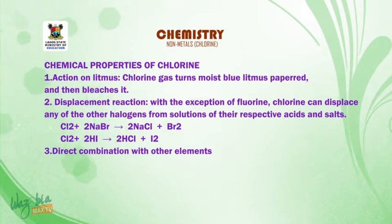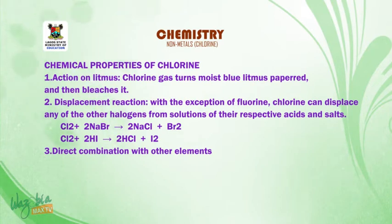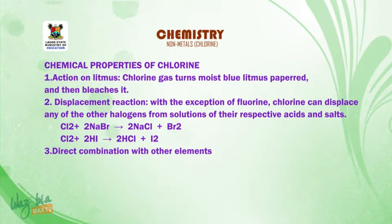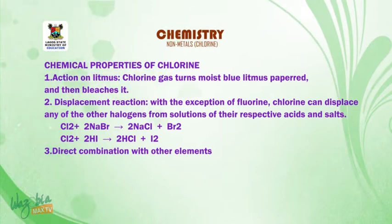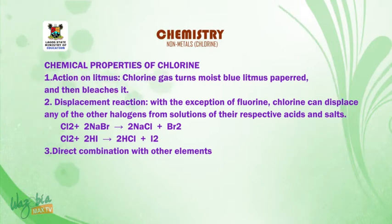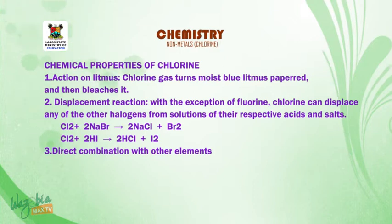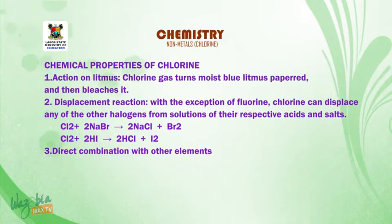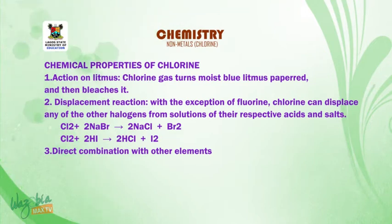Chemical properties of chlorine. Number 1: action on litmus — chlorine gas turns moist blue litmus paper red and then bleaches it. Number 2: displacement reaction — with the exception of fluorine, chlorine can displace any of the other halogens from solutions of their respective acids and salts. In the first equation, chlorine displaces bromine from a solution of its salt to give sodium chloride and bromine. In the second equation, chlorine displaces iodine from hydrogen iodide to give hydrogen chloride and iodine.